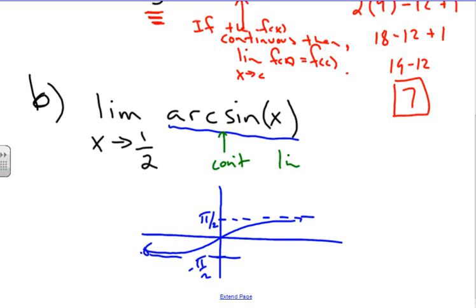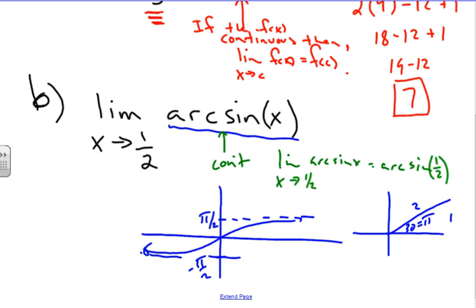That means the limit as x approaches one half of arcsin of x is going to equal arcsin of one half. If you're wondering what arcsin of one half is, well sine of one half means one has to be the opposite side, two is the hypotenuse, because this is our ratio for an angle. What angle has one and two? That's going to be 30 degrees, which actually equals π over 6. So if I plug in sine π over 6, we get one half, and that's where it's approaching.